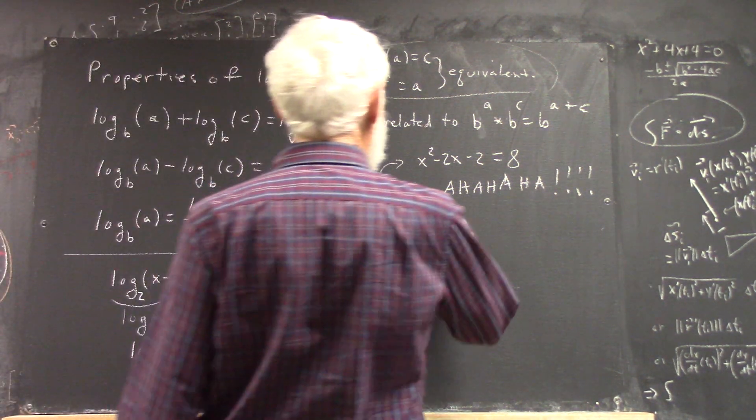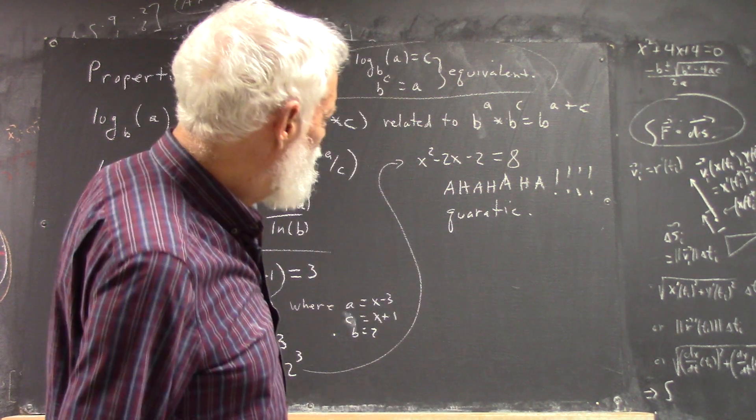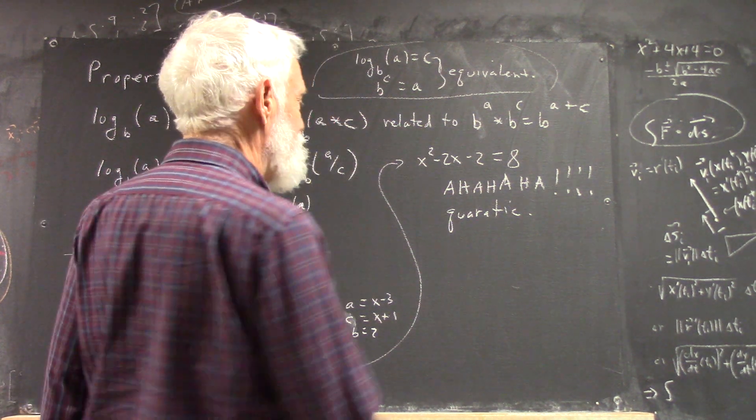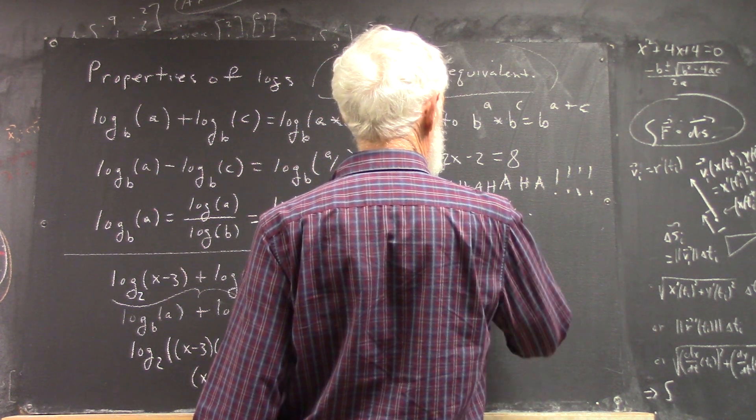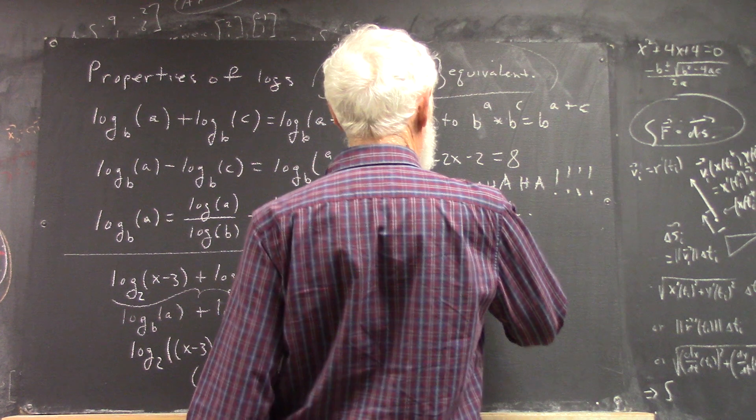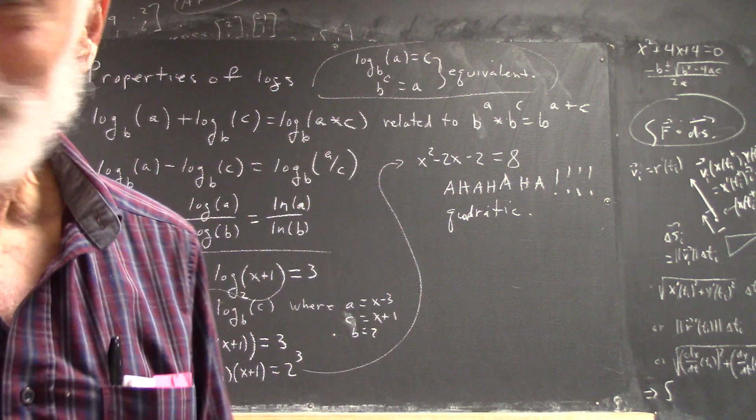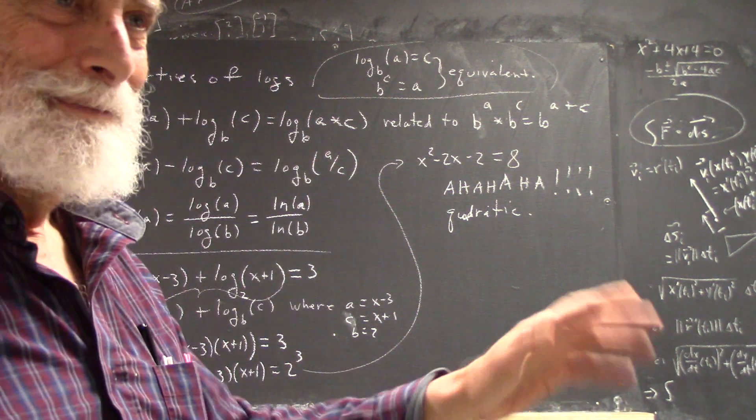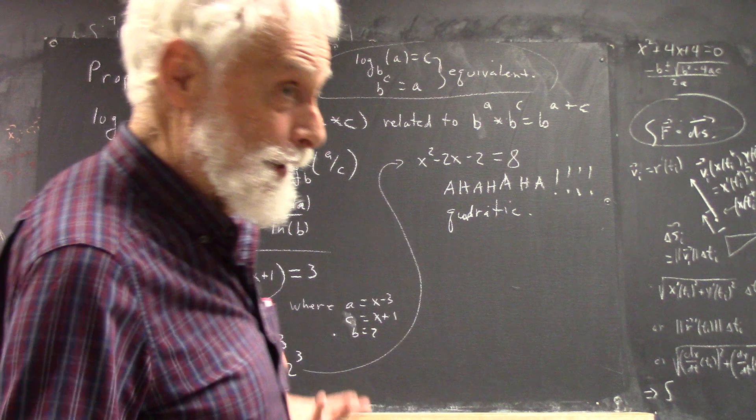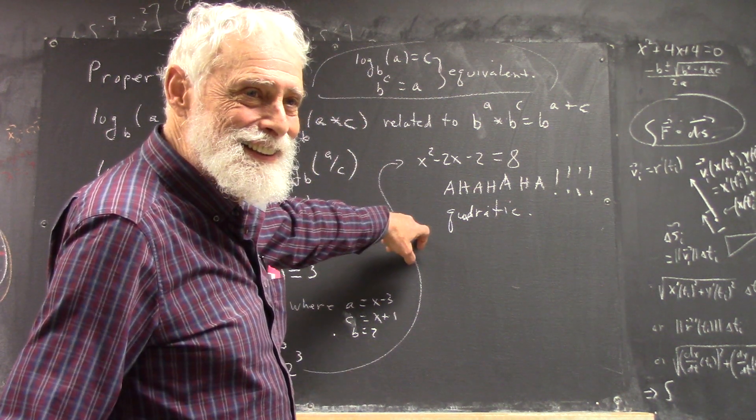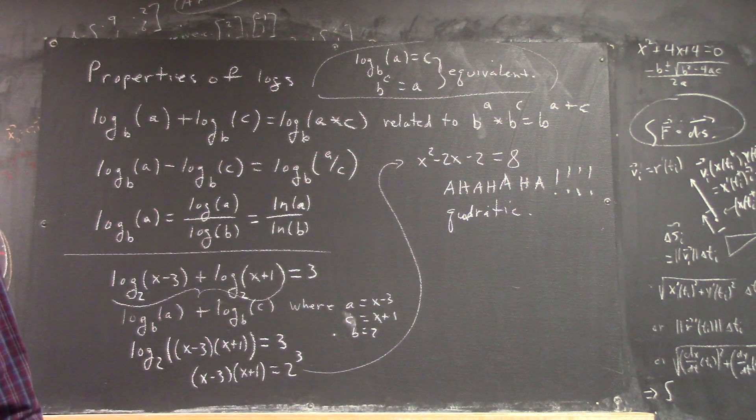It's a quadratic equation. It's a quadratic equation. How do you solve a quadratic equation? If you can factor, great. If you can't factor it, use a quadratic formula. Or complete the square if you want to. So. Ah-ha-ha-ha-ha-ha-ha. This is quadratic. Quadratic. It's a quadratic equation. Wouldn't it be x squared minus 2x minus 3?